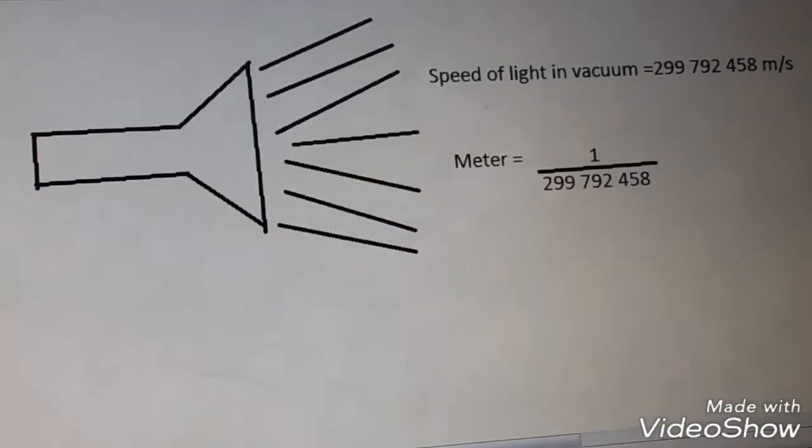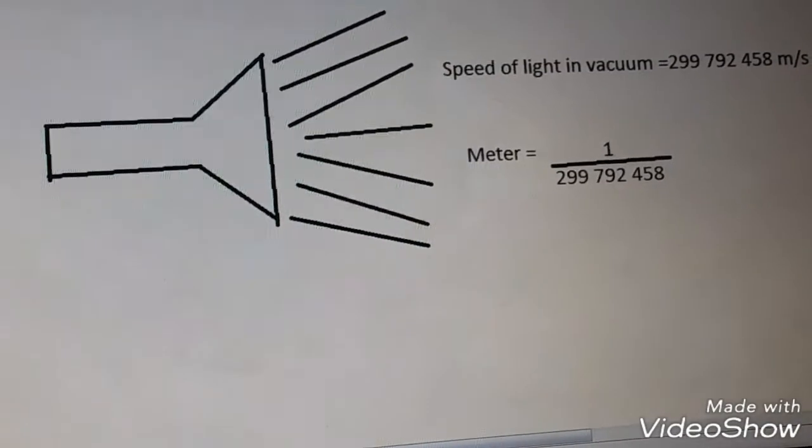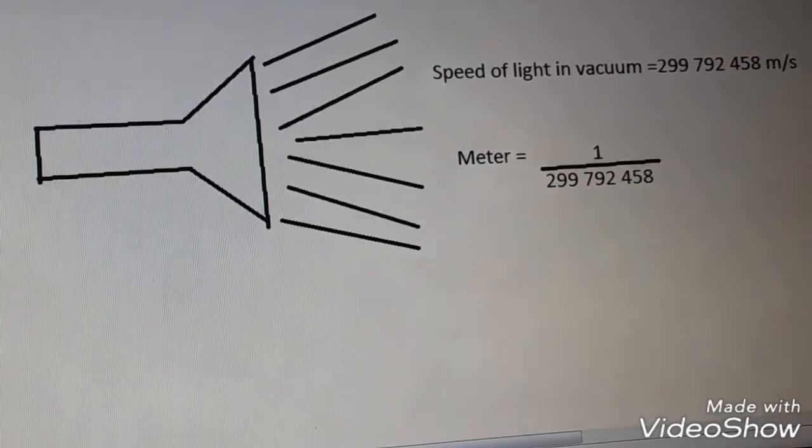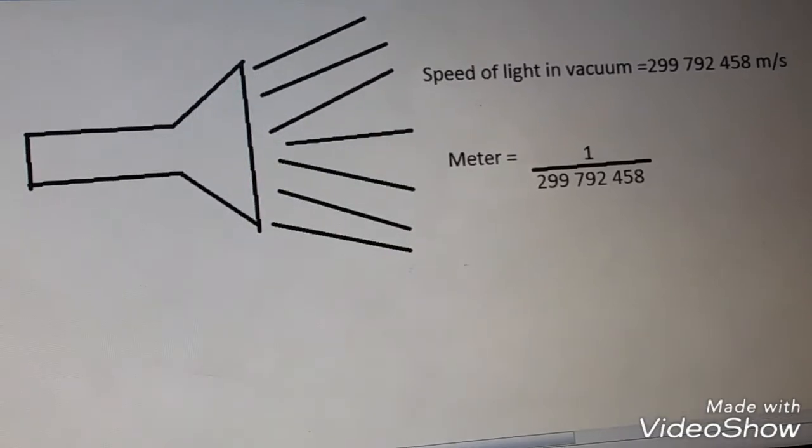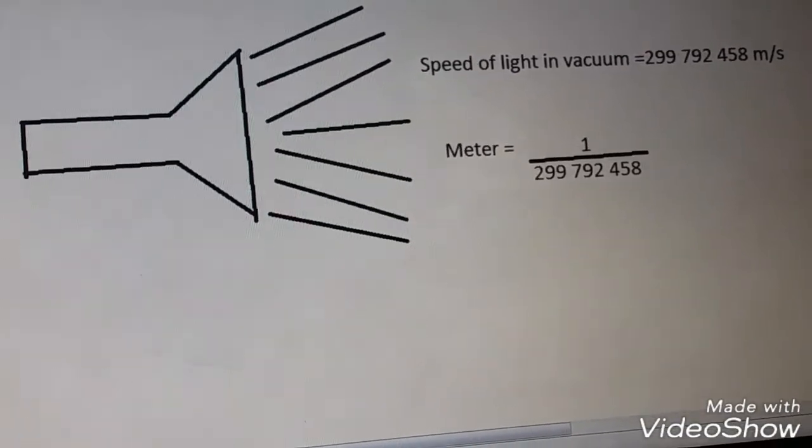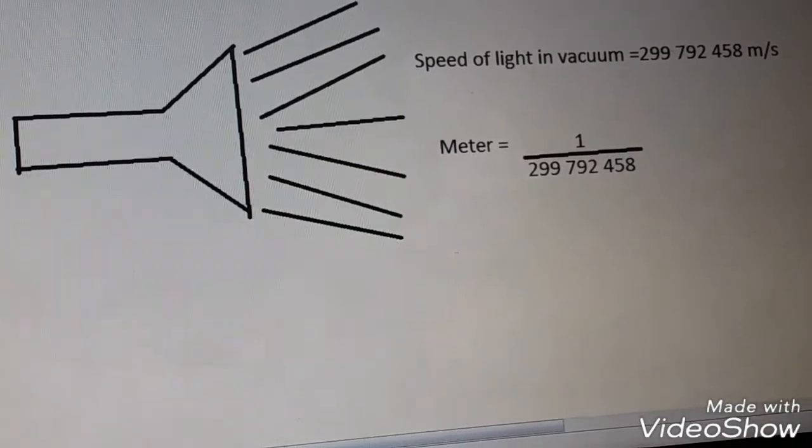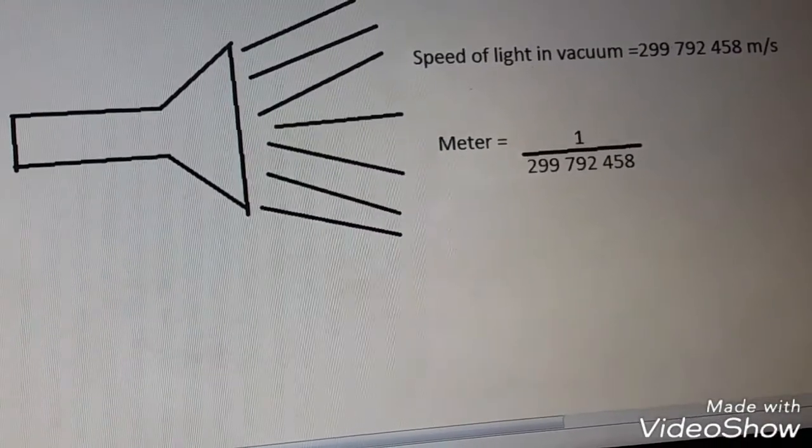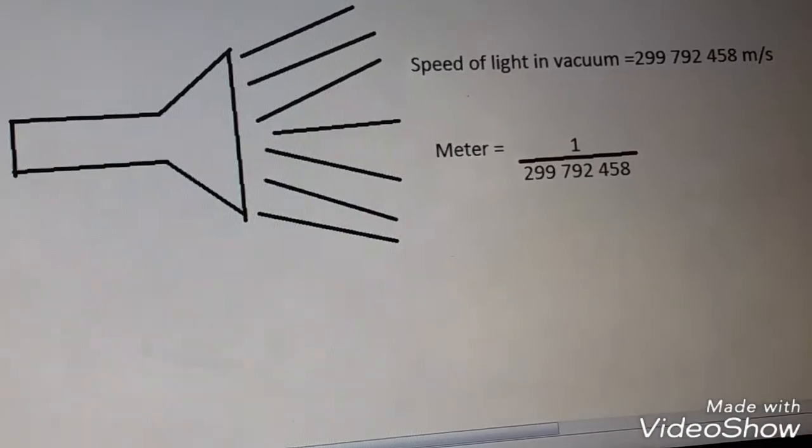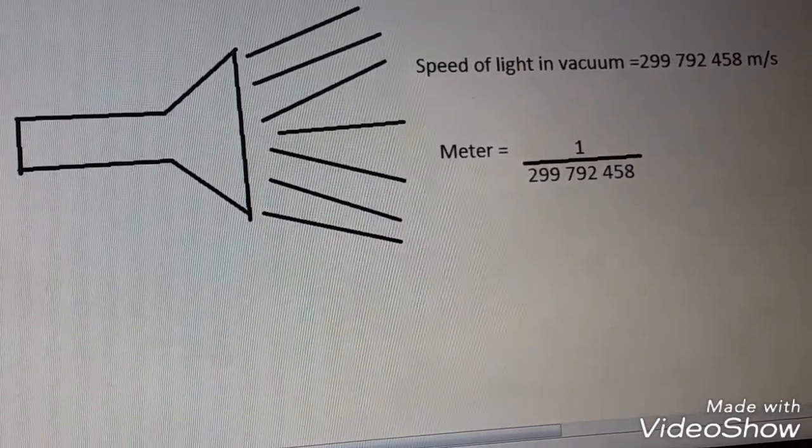The meter was redefined as the distance travelled by light in a specific time interval, in the words of the 17th General Conference on Weight and Measures. This time interval was chosen so that speed of light is exactly 299,792,458 meter per second.